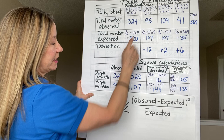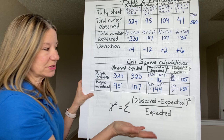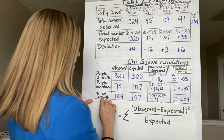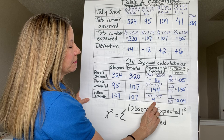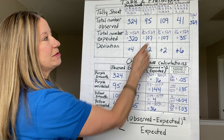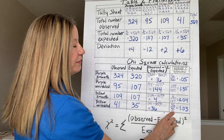Moving down: for purple and wrinkled, we observed 95 and expected 107. 95 minus 107 squared is 144 — you lose the negative value once you square something. 144 divided by 107 is 1.35. For yellow and smooth: observed 109, expected 107; difference of 2 squared is 4; 4 divided by 107 is 0.04. For yellow and wrinkled: observed 41, expected 35; the square of the difference (6) is 36; 36 divided by 35 is 1.03.